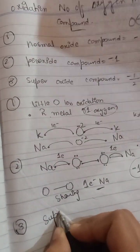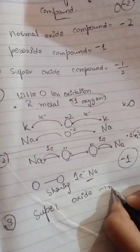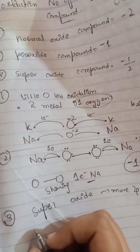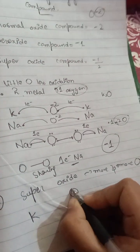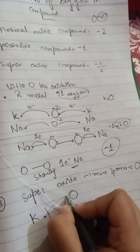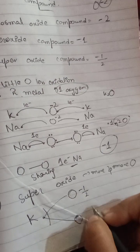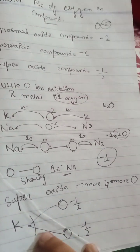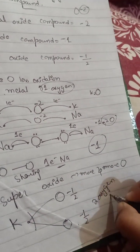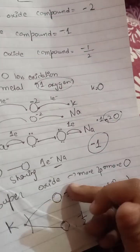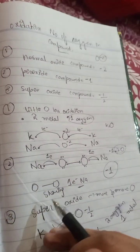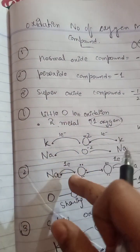The third type is the superoxide, which has an even higher concentration of oxygen. For example, potassium superoxide KO₂: potassium has one electron in the outer shell. Half of that electron effectively goes to one oxygen and half to the other, giving each oxygen minus one over two. So the order is: normal oxide has the least oxygen concentration, peroxide has more, and superoxide has the most.